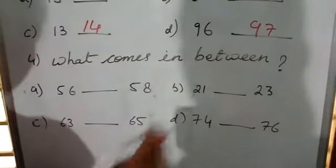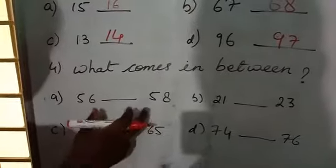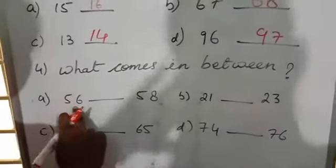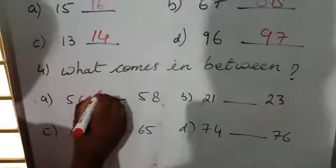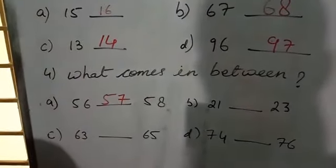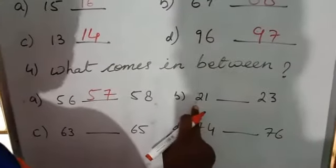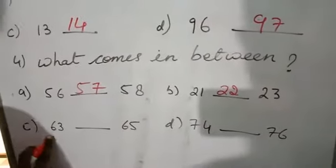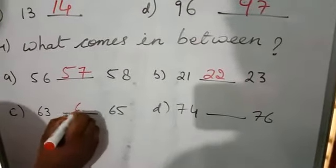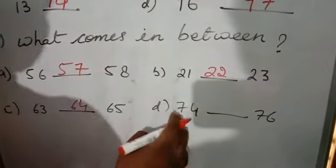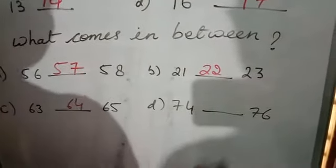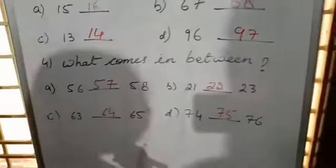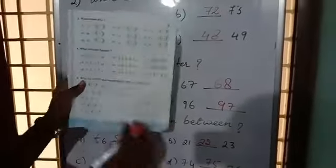Next one is: what comes in between? You have to tell which number will come in between 56 and 58? 57. Next, which number will come in between 21 and 23? 22. Next, which number will come in between 63 and 65? 64. Last one: which number will come in between 74 and 76? 75. You have to do all these exercises in your maths book and do practice in your rough copy.